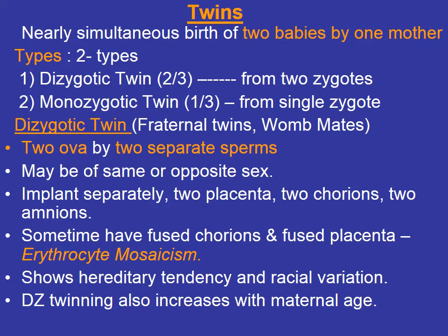Multiple gestation may be twins, triplets, and so on. Twin pregnancy is the nearly simultaneous birth of two babies by one mother. It is of two types: dizygotic twins, which account for two-thirds of twin pregnancies — the development of two babies from two separate zygotes.